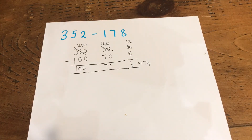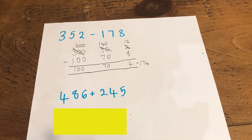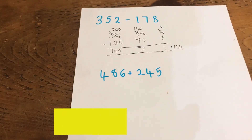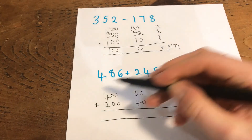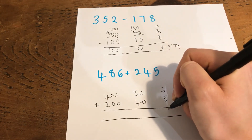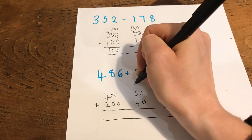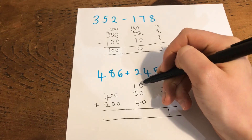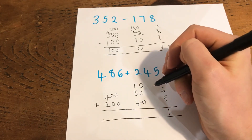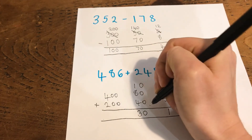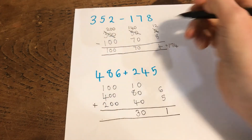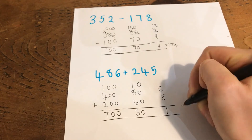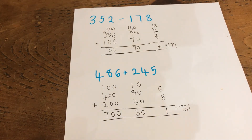Did you get it right? Well done if you did. Now here is the addition question: 486 add 245. Lay it out in the column method, work it out, then check. 6 add 5 is 11 — leave the 1 unit and put the 10 on top of the tens. 10 and 80 and 40 is 130 — leave the 30 and carry the 100 to the hundreds column. 100 add 400 add 200 is 700. The answer is 731. Did you get it right? Well done if you did.